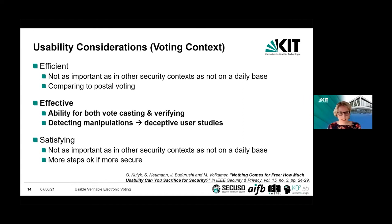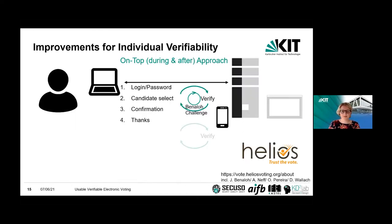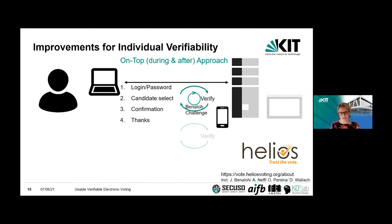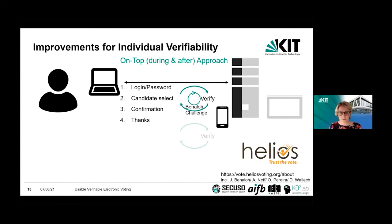Now we start with the first system — our research on the Helios voting system. It's quite complicated, so you may ask why we selected to work on the usability of Helios. The answer is that this system was proposed by security experts, there's a lot of literature on it, and there are proofs — everything you want from a security point of view. Furthermore, there's a user study conducted by Weber and Hengartner from Canada in 2009 using one of the first Helios interfaces, and only 10% of participants were able to verify.